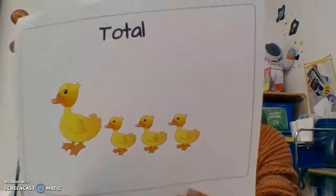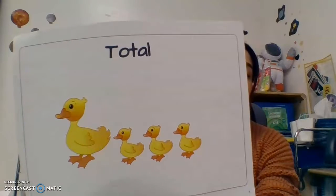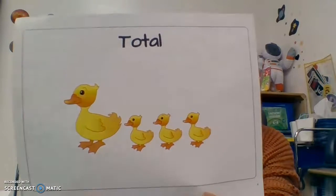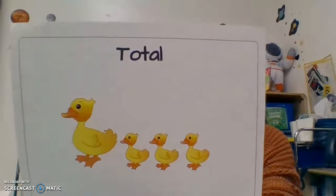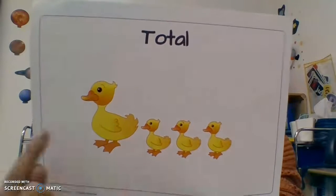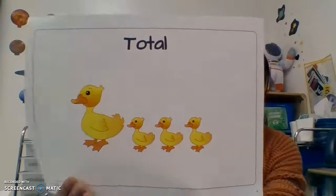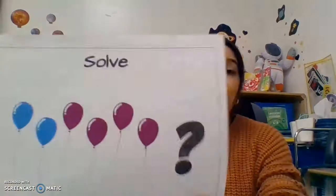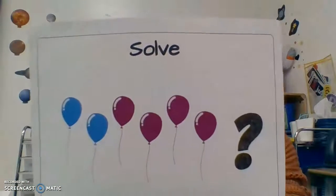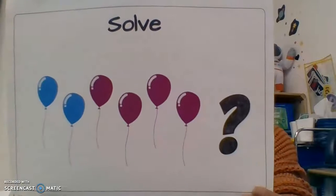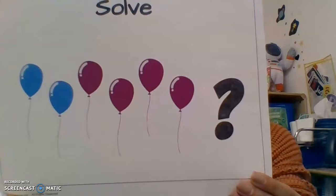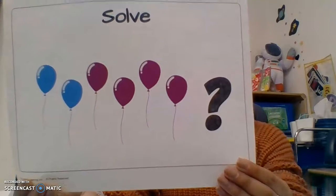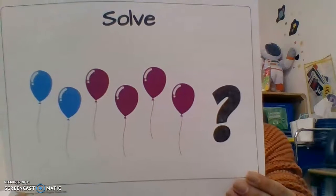Total means the number of objects we have all together. And solve — every time we see a word problem or a number sentence, we are solving, trying to find the sum, the difference, the total.